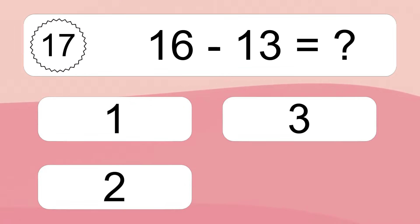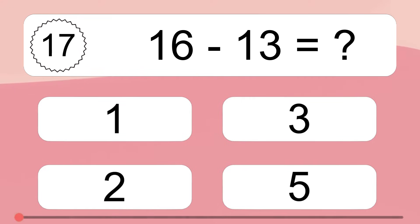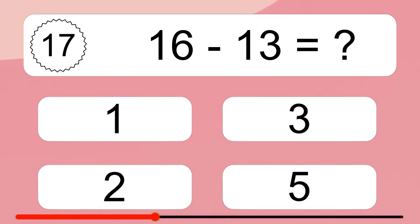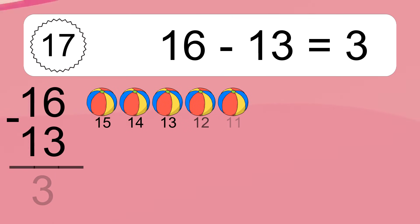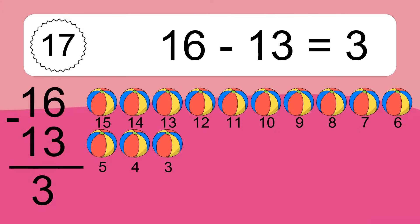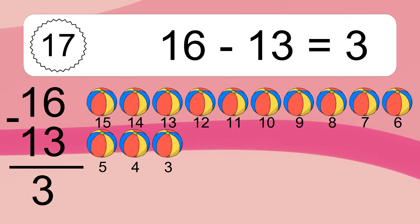16 minus 13 equals what? 16 minus 13 equals 3. Let's count it: 15, 14, 13, 12, 11, 10, 9, 8, 7, 6, 5, 4, 3.